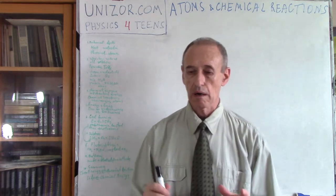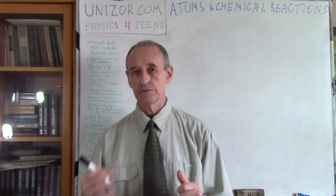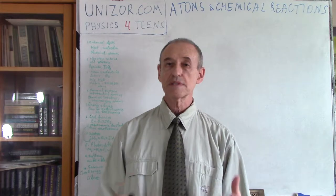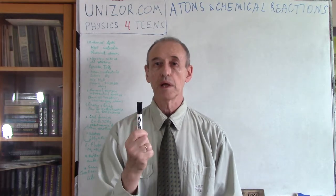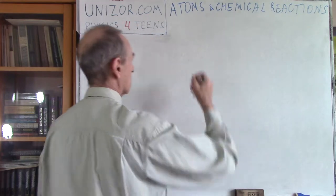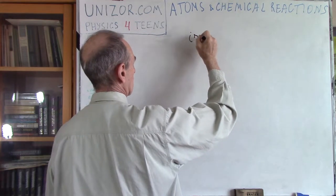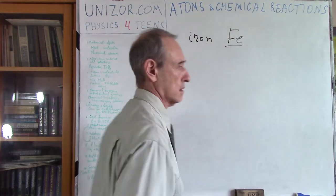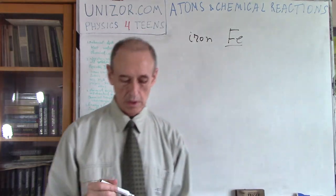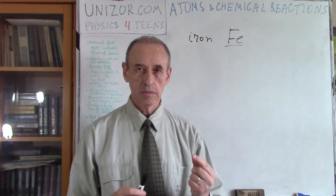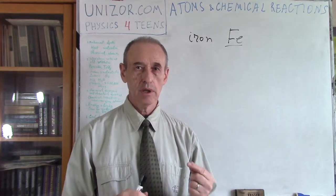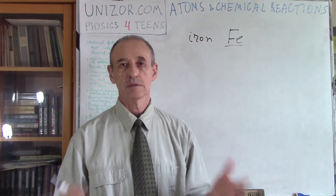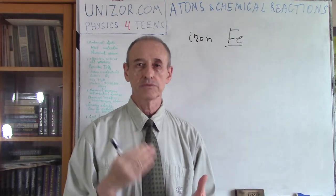The molecules are made of atoms. There are very simple molecules which contain only one atom. An example is iron, whose symbol is Fe from the Latin ferrum. One atom of iron constitutes one molecule — one molecule consists of one atom.